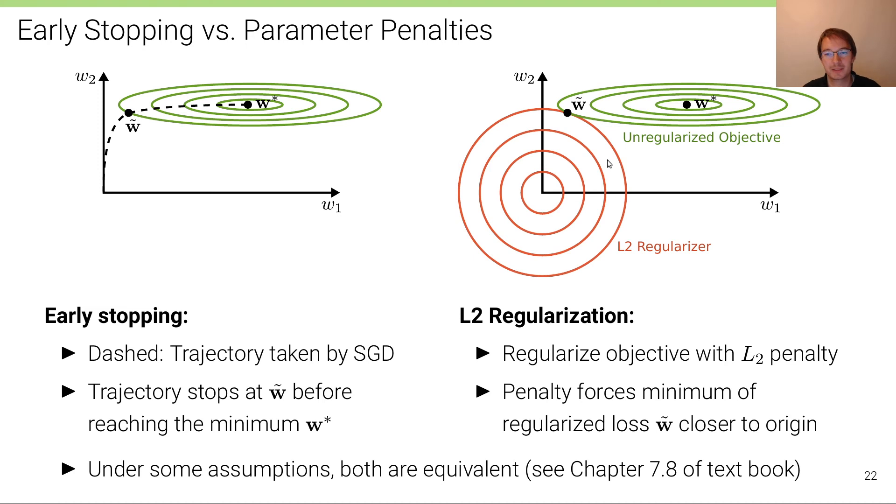As we've seen before, in L2 regularization we have this competition of the regularizer and the unregularized objective, here in red and in green, where the penalty, this regularizer, forces the minimum of the regularized loss w-tilde to be closer to the origin than w-star, the minimum of the unregularized objective. So as you can see, both of these regularization strategies have a very similar effect, and in fact, under some assumptions, both are actually equivalent. To see this, I recommend having a look at Chapter 7.8 of the Deep Learning textbook.